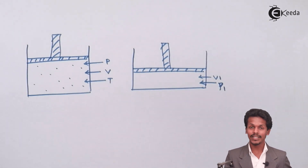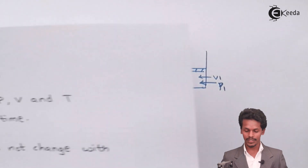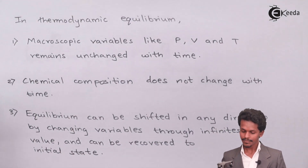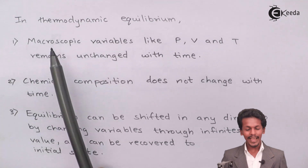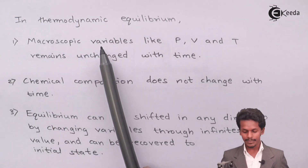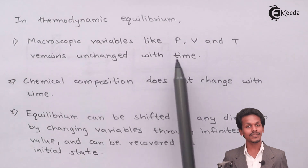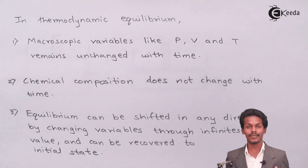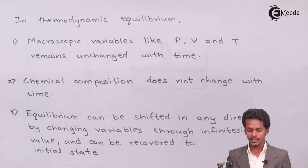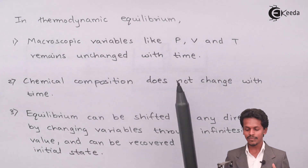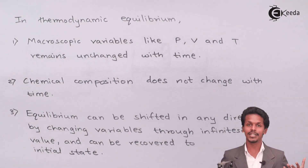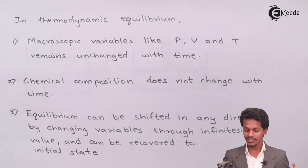To maintain thermodynamic equilibrium, the first condition is that the macroscopic variables — pressure, volume, and temperature — must remain unchanged with time.